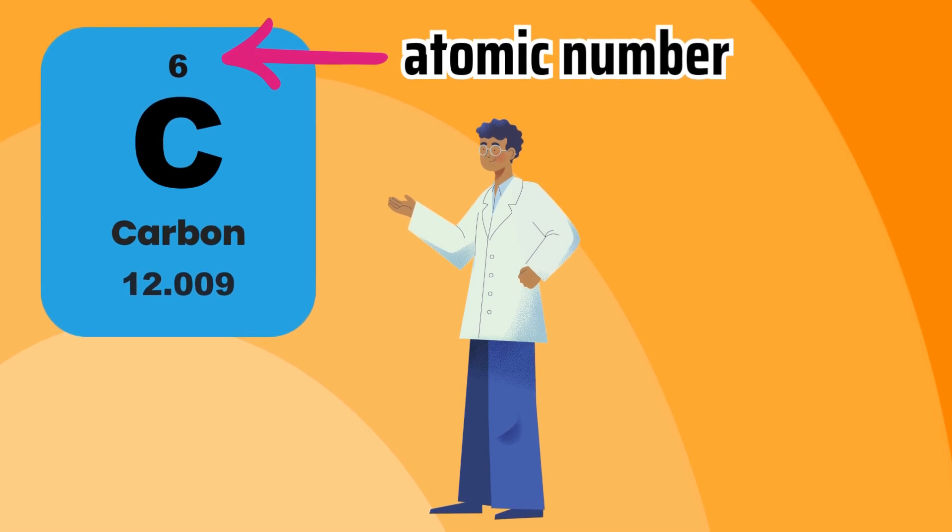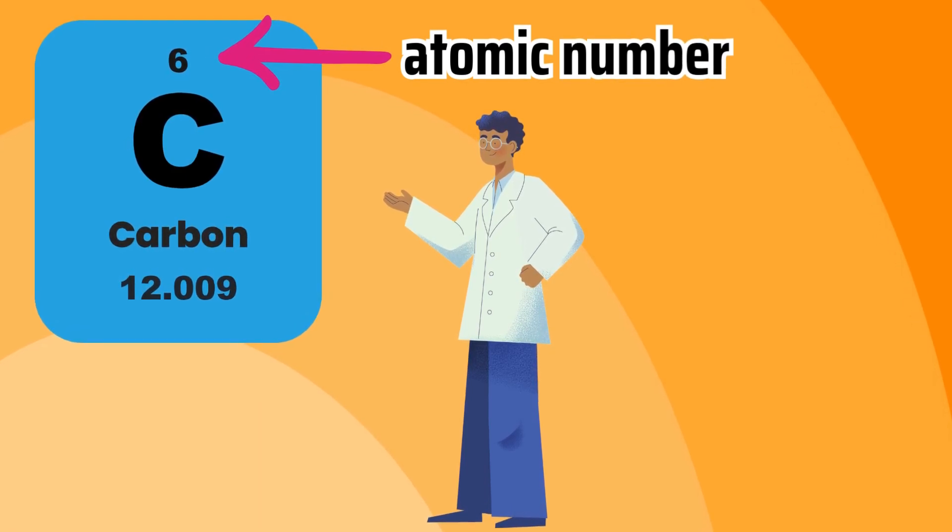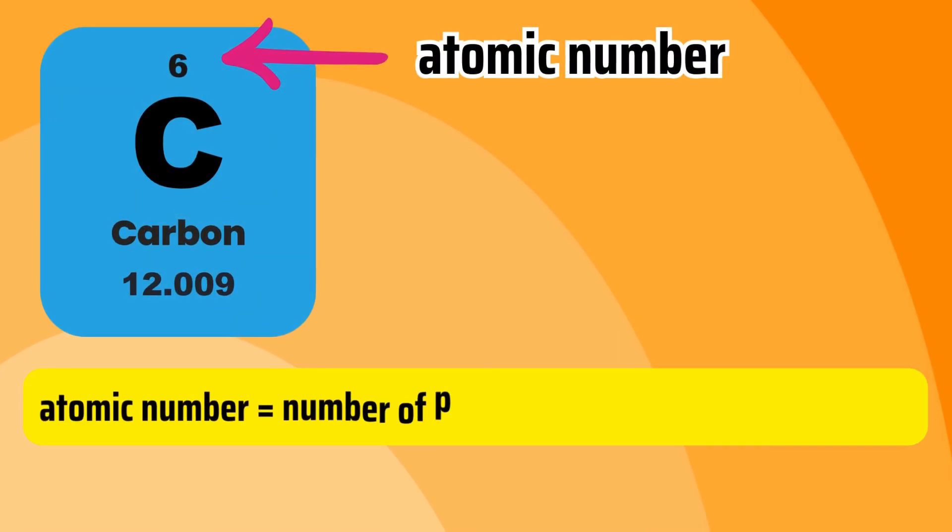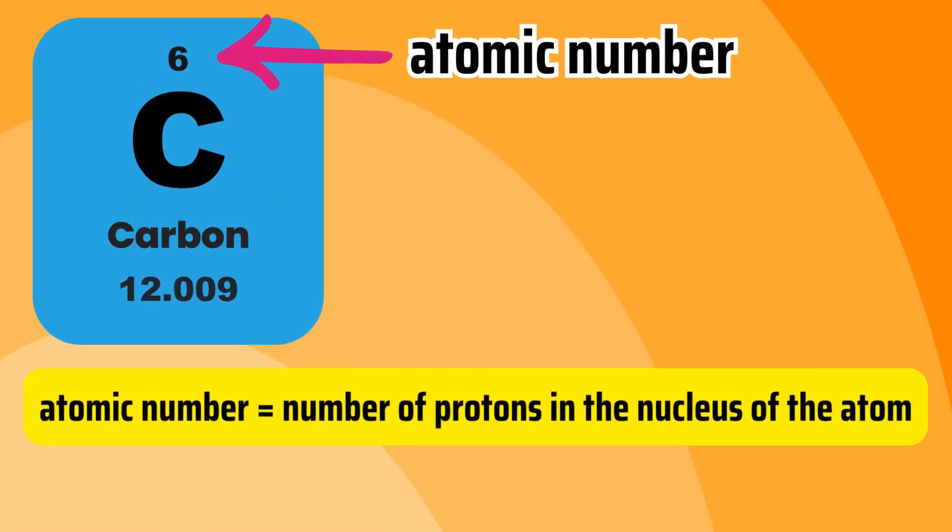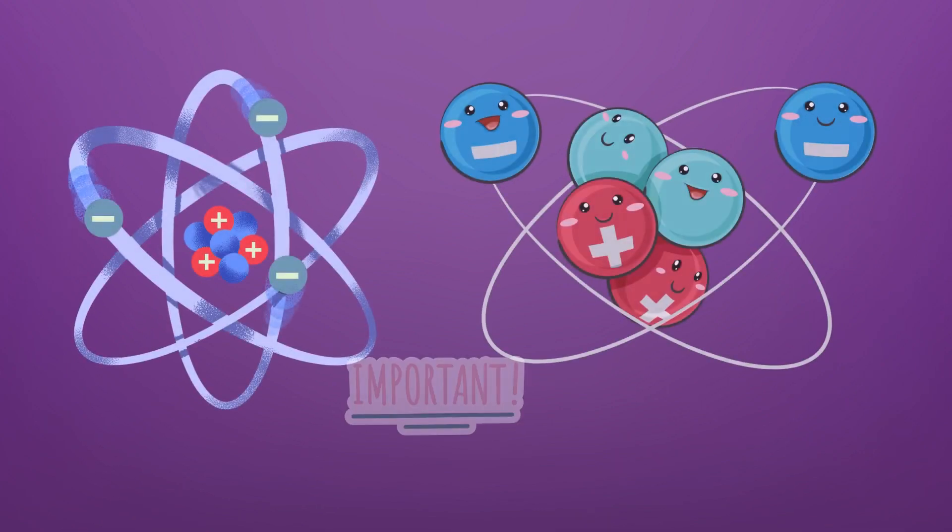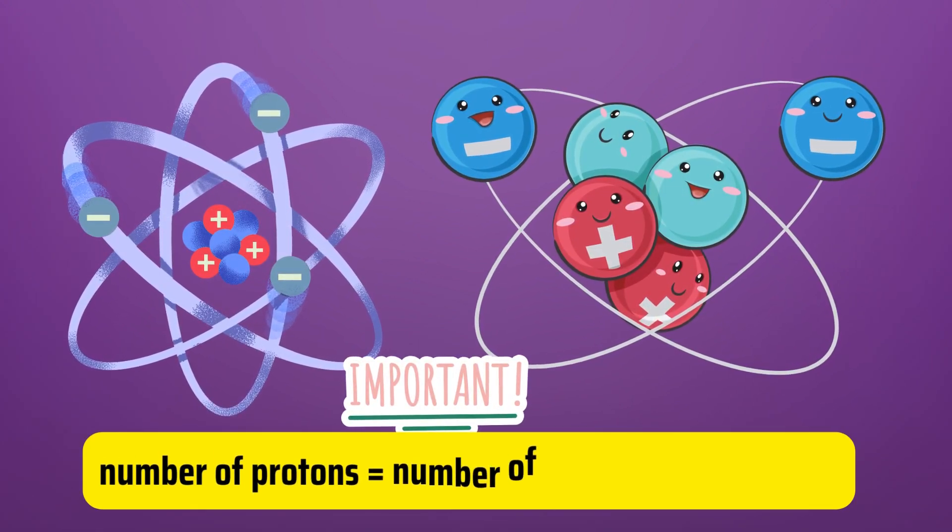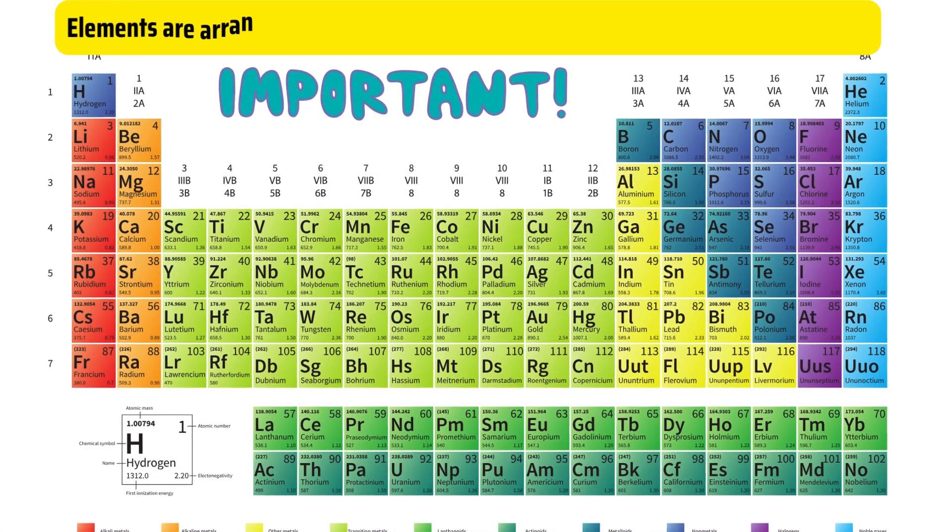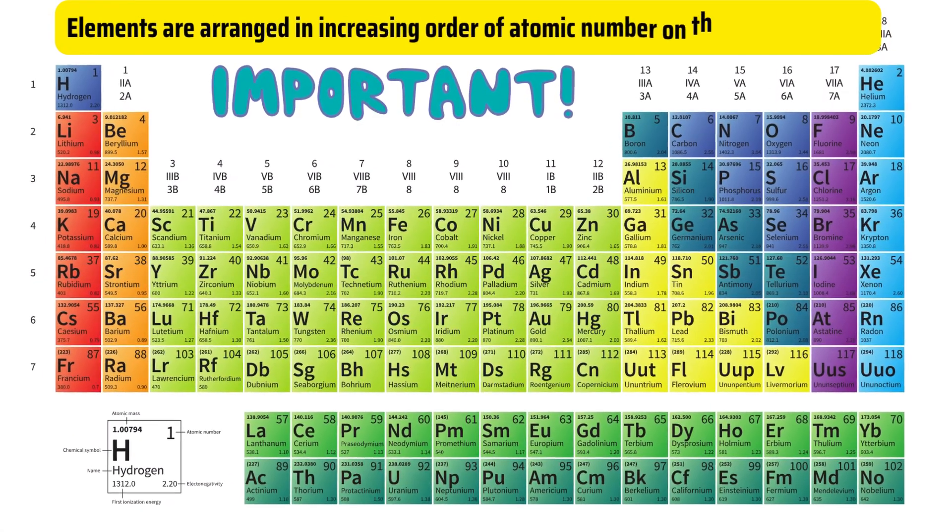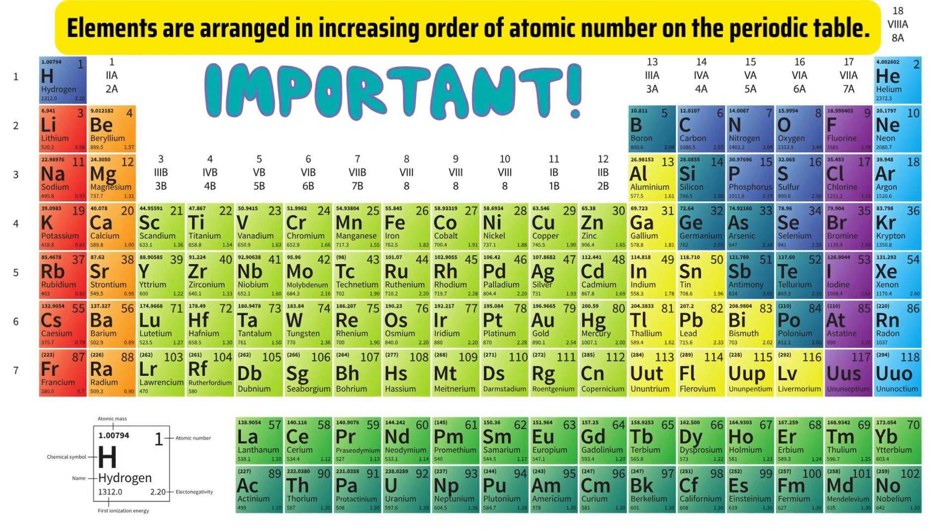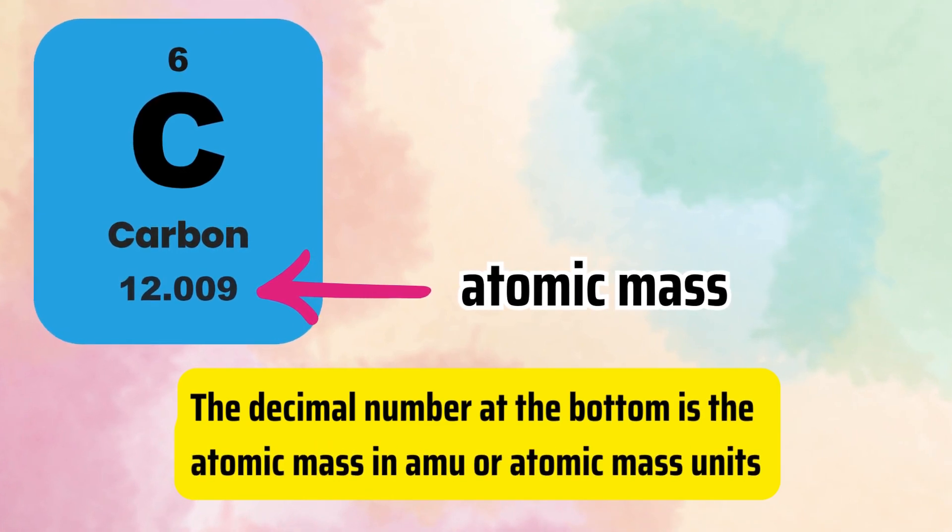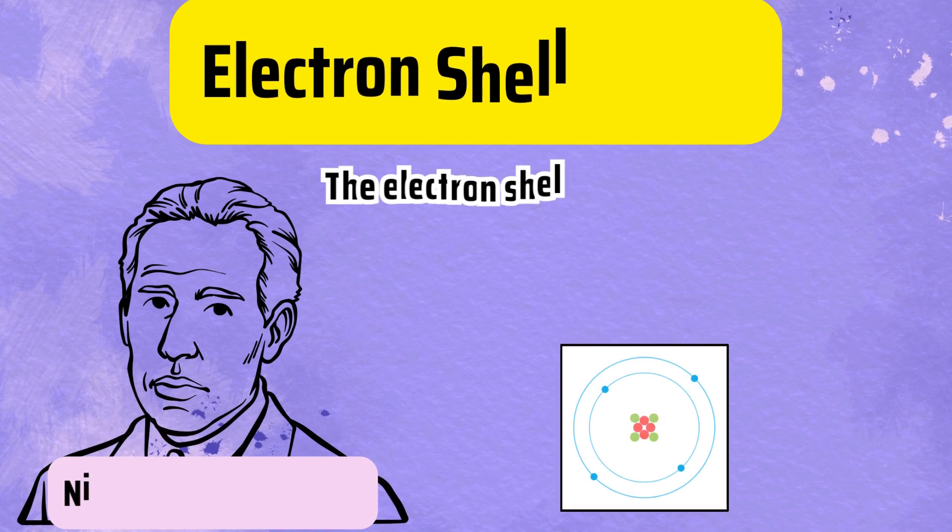The whole number located above the element symbol is the atomic number. And atomic number equals the number of protons in the nucleus of the atom. And as we all know, number of protons equals the number of electrons because an atom is electrically neutral. Elements are arranged in increasing order of atomic number on the periodic table. The decimal number at the bottom is the atomic mass in AMU or atomic mass units.